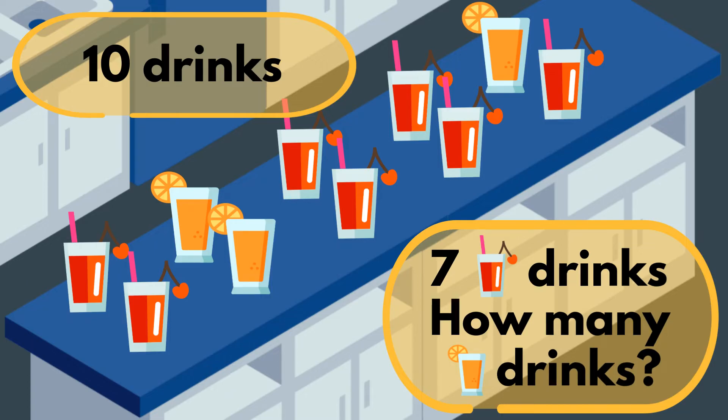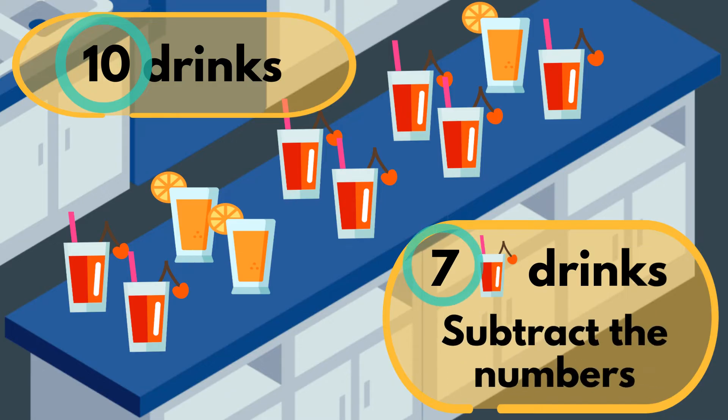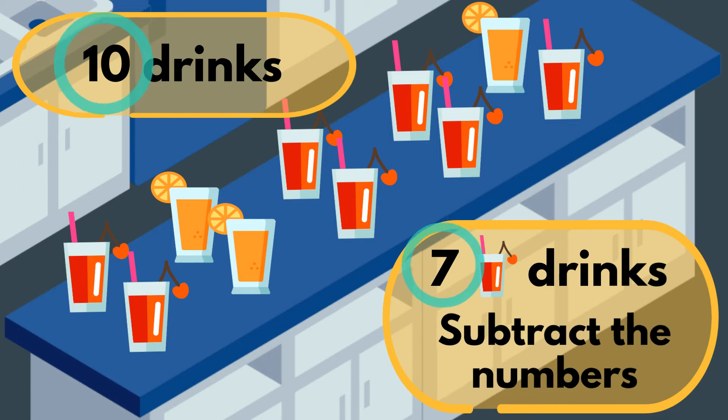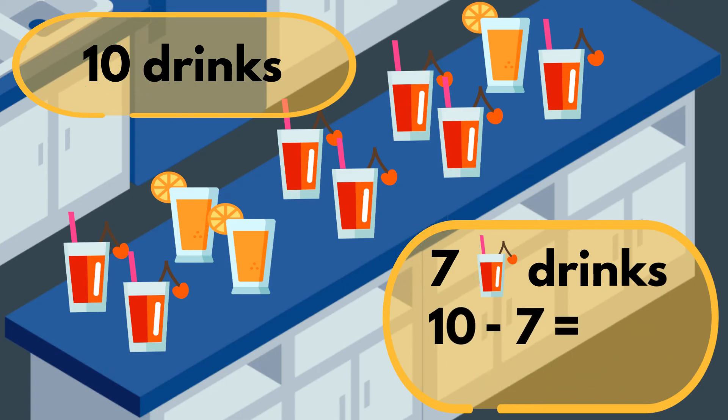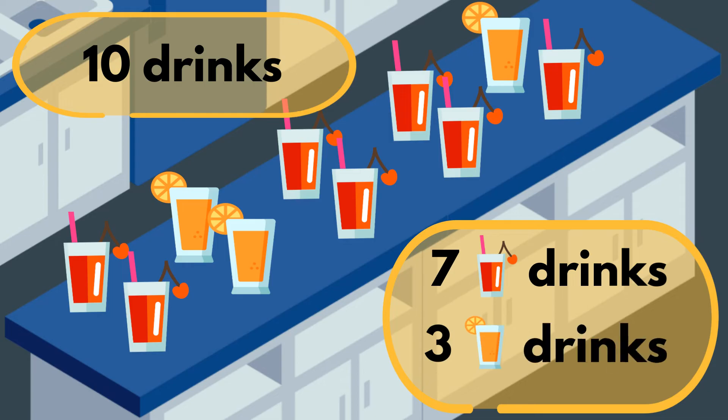Since we know the total number of drinks and the number of cherry drinks, we can simply subtract the numbers to find out how many orange drinks there are. Ten minus seven is equal to... That's right! Three! So there are three orange drinks.